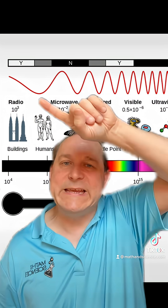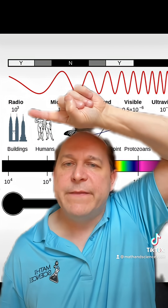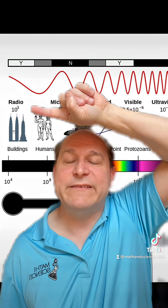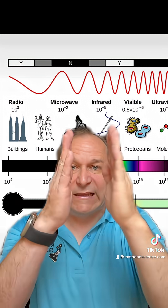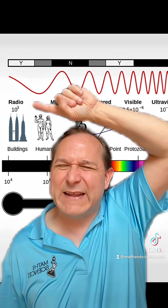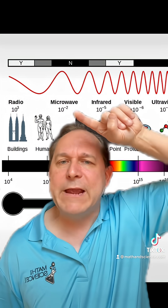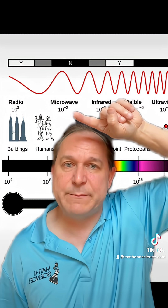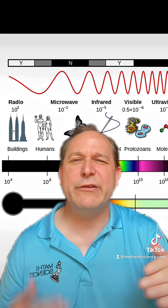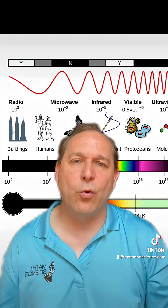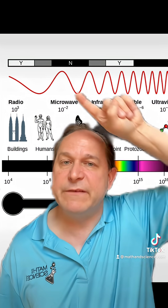We can zoom into the EM spectrum. Here we have visible light, and way over here we have radio. The wavelength — literally the physical size of the wave — is about 1000 meters, or hundreds of meters on a typical broadcast. Microwaves are in the centimeter range, then infrared and visible light are around 10 to the minus six meters, so in the range of hundreds of nanometers, or millionths of a meter. Visible light has much, much higher photon energies.